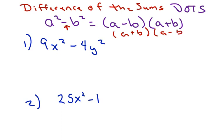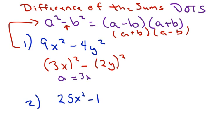So if I write this first problem to follow this form, I'm going to write this as 3x squared minus 2y squared. Because if you square this out you get 9x squared, and if you square this one out you get 4y squared. So technically this is my a, so a is 3x. My b is 2y. And I just fill in the formula, so we have 3x minus 2y times 3x plus 2y.